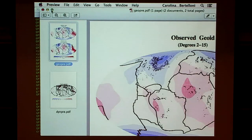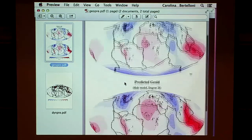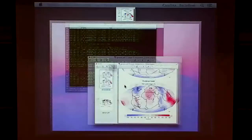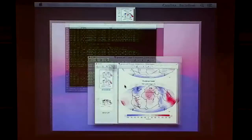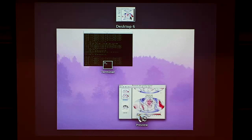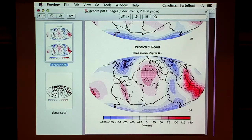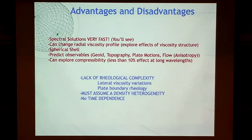Here is the observed geoid, degrees 2 to 15, in meters — the highest amplitudes are around 120 meters. This is my prediction. Not bad, with some issues. The correlation is reasonably good. This is probably one of my most cited papers. The point is that it is extremely fast, allowing you to understand the physics of what's going on and explore viscosity structures quickly.